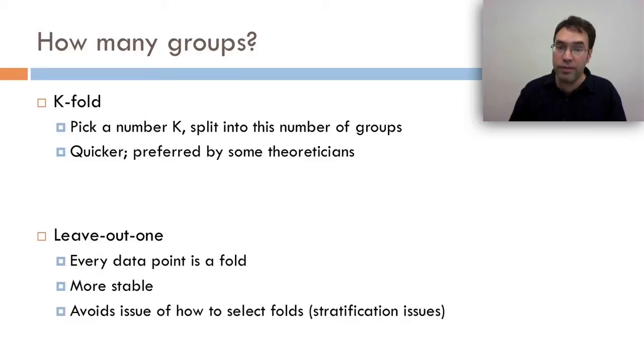K-fold is quicker, and it's preferred by some theoreticians. Leave-out one is more stable, and it avoids the issue of how to select folds, which leads to stratification issues, which I'll talk about in a minute. The big thing is that when you use leave-out one, you don't have to think about how you select your folds. But when you use k-fold, you really do. And different choices in how you select your folds can have big differences in terms of goodness.